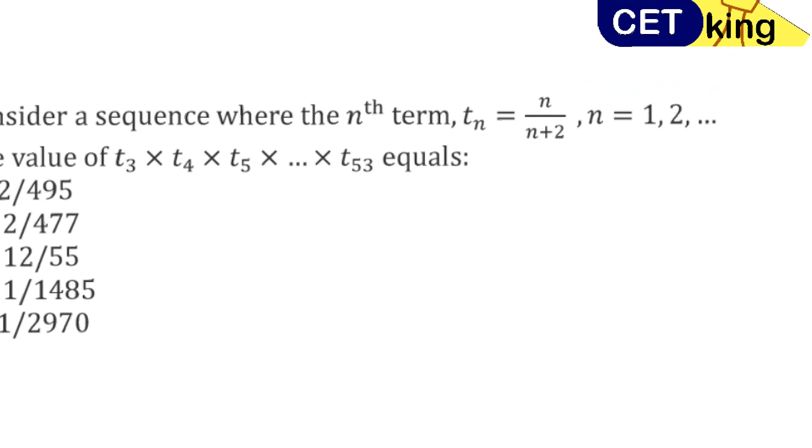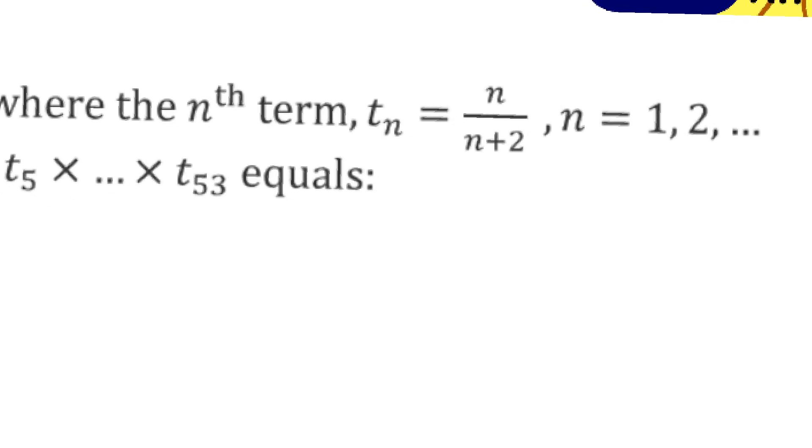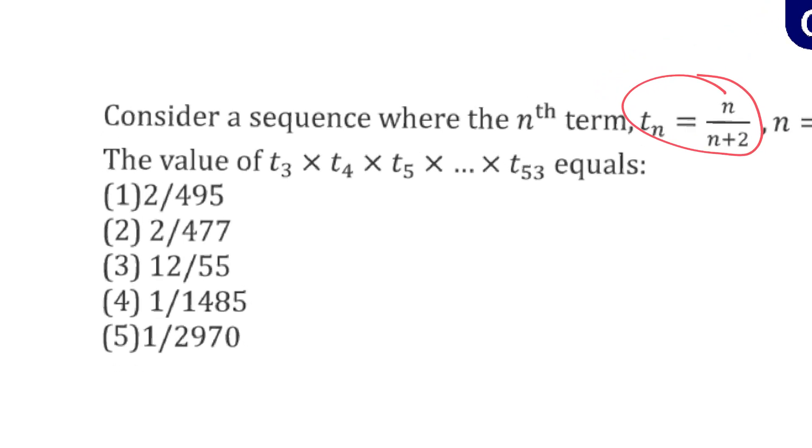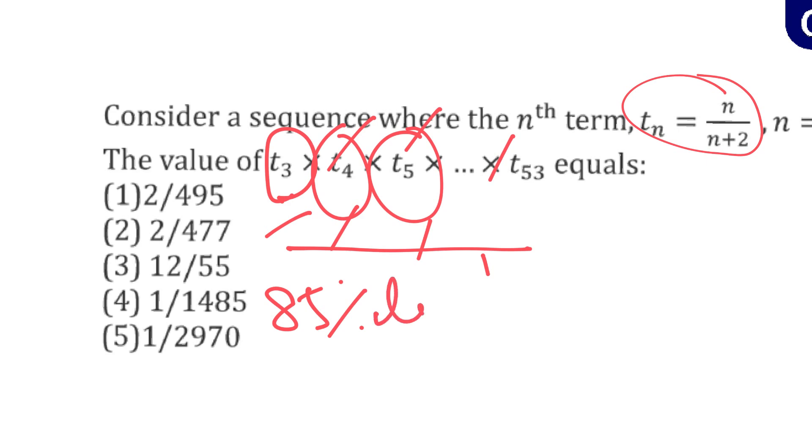Let's look at one more scary looking question. Find the sum where nth term is Tn equals n divided by n plus 2. Find the value of T3, T4, T5 up to T53. Put 3, 4, 5, 6 in place of n and multiply everything. All the values will go cut, most of the values will go cut, and we will get your answer. If I focus on my basics, I am touching 85 percentile in the CAT exam without putting any extra effort. Add shortcuts, you can easily touch 95 percentile.